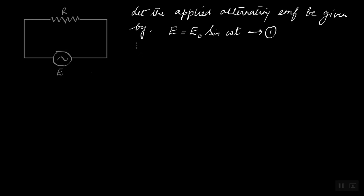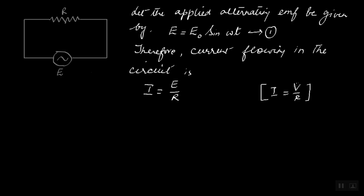Therefore, current flowing in the circuit is I which is E by R. This is very similar to I equals V by R, which is Ohm's law. So instead of V, we write E. Let us replace the value of E from equation one. You get E naught by R sine omega t. Let's call this equation two.